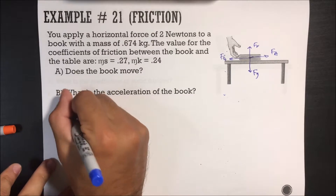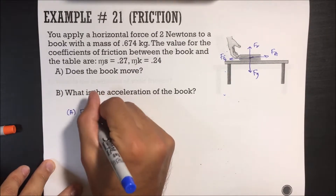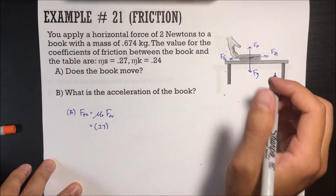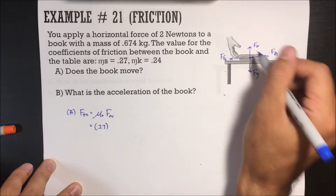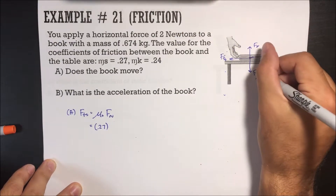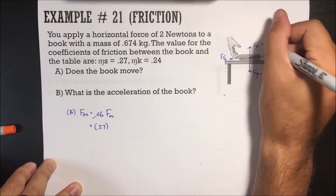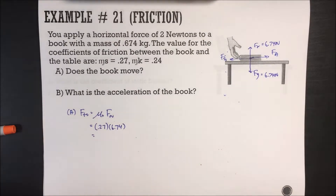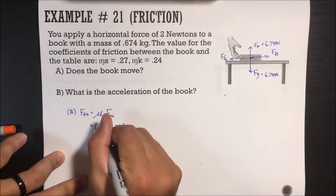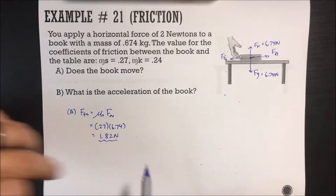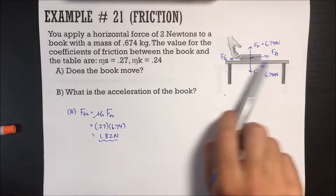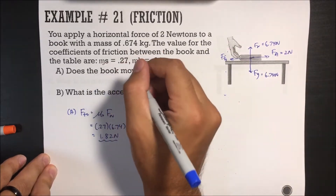Let's find the maximum static friction force: F_friction_static = μ_static × F_normal = 0.27 × 6.74 N = 1.82 N. Since the person is pushing with 2 newtons, which exceeds 1.82 N, the book will move. Yes, the book moves.